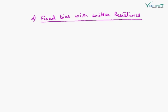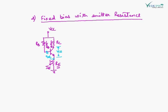The second biasing technique is fixed bias with emitter resistance. The circuit is just like fixed bias except a resistance RE is connected at the emitter. The current through the base is IB, through the collector is IC, and through the emitter is IE. VBE is the base-emitter voltage and VCE is the collector-emitter voltage. To find the operating point we again calculate IC and VCE.